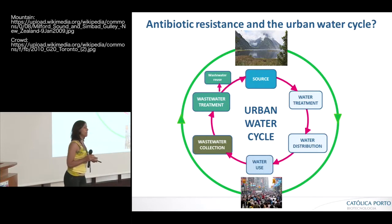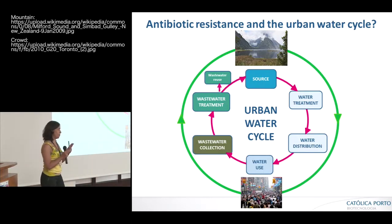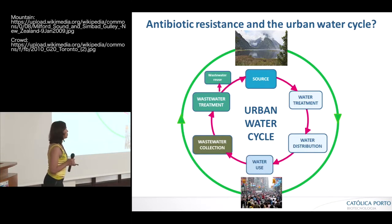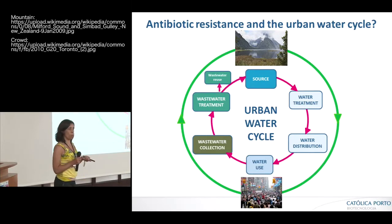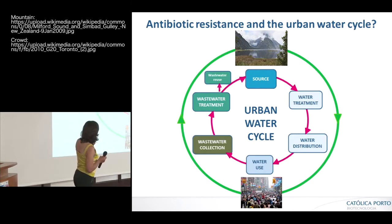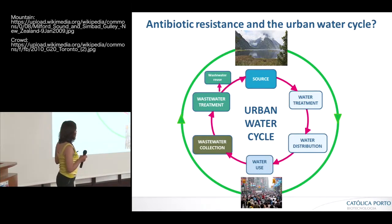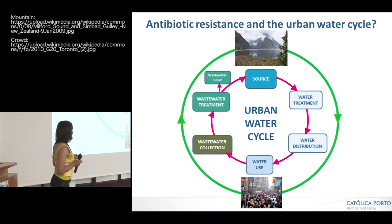The urban water cycle has everything to do with the spread of antibiotic resistance. In this cycle we have two major parts. One is what we might call the unclean part, where we have water that results from our use and consumption — this water is normally collected, treated, and then delivered back to the environment, and we hope that it is clean enough to return. On the other part of the cycle, water is abstracted from clean water sources, disinfected, and distributed for use. In both parts of this cycle, we have evidence that contamination with antibiotic resistance can occur.